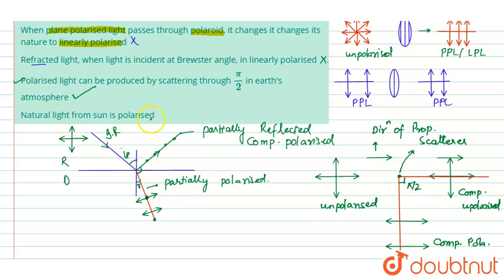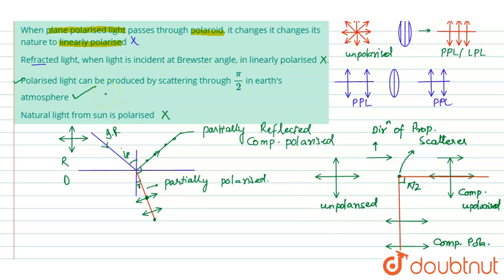Statement four says that natural light from the sun is polarized. However, natural sunlight is simply unpolarized light, as we can see — it is unpolarized. So statement four is wrong, which means statement three is the correct answer. The entire explanation should now be clear.